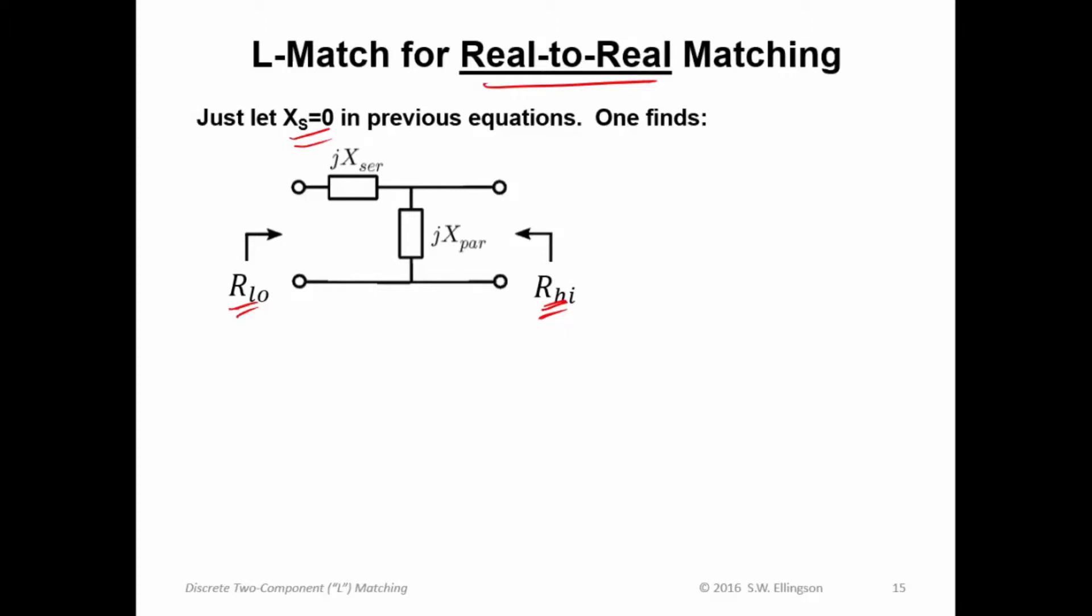I'm going to find that I'm always going to want to put the reactance in parallel with the higher-valued resistance. And then if I just go ahead and simplify the equations that I get in that case, then I find that the parallel value of reactance, this one here, is given by a very similar expression to what I had before, except with this new notation, R_high and R_low.